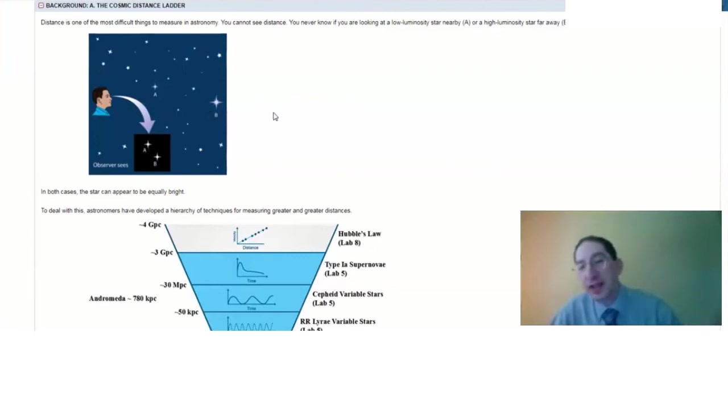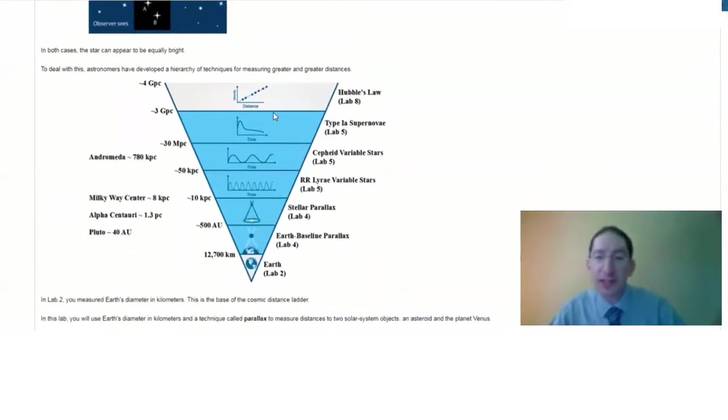Because of this, astronomers have developed a bag of tricks for measuring distances farther and farther and farther away. We call this bag of tricks the cosmic distance ladder. At the base of the cosmic distance ladder we have the Earth, the size of which, the diameter of which, we measured at the end of lab two.